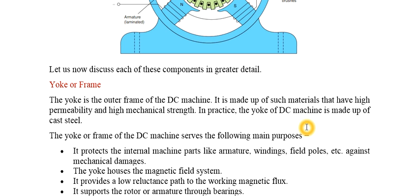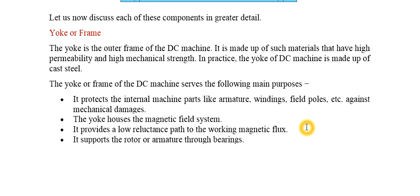The yoke is the outer frame of the DC machine, generally made of cast steel, which has high permeability and provides mechanical strength. Its purpose is to provide protection, keep the magnetic field system in place, and provide a low reluctance path to the working magnetic flux — similar to how a transformer's magnetic core provides a path for flux. It also supports the rotor or armature through bearings.